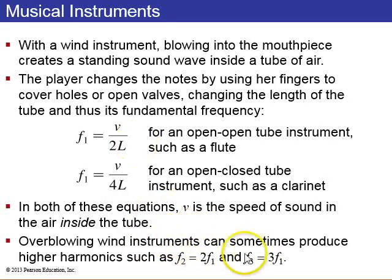And if you overblow these instruments, you can produce higher harmonics, such as f2, which is available for a flute, you can double it, or f3, such as for a clarinet, you can triple the fundamental frequency, so you'll be your first harmonic there for a clarinet.